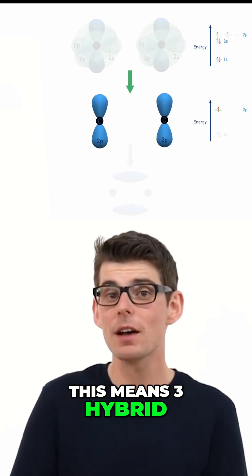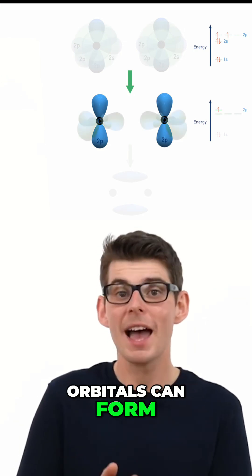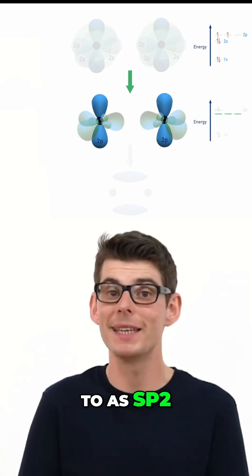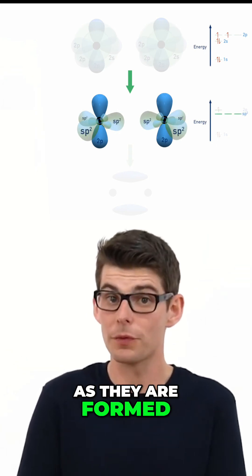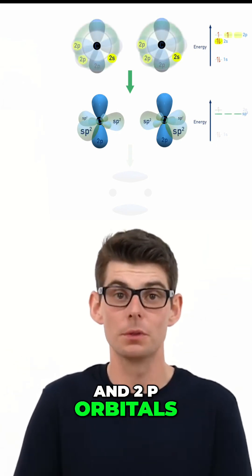This means three hybrid orbitals can form and they are referred to as sp2, as they are formed from one s orbital and two p orbitals.